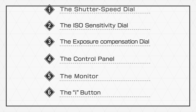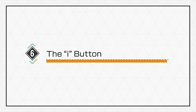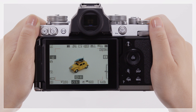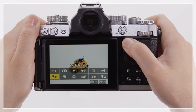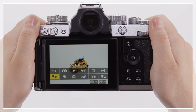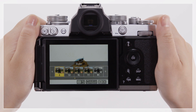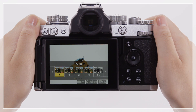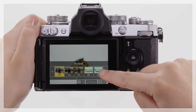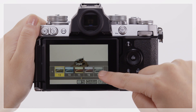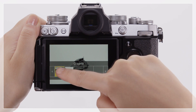Our last stop is the i button. Pressing the i button displays the i menu, which gives you quick access to frequently used functions. Highlight the desired item and press OK to view options. Highlight the desired option and select it to change the setting and return to the i menu.